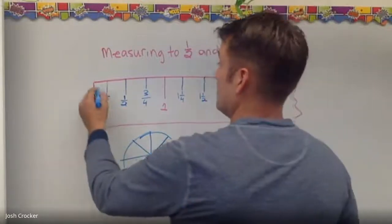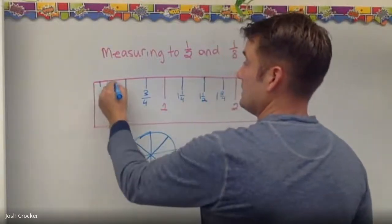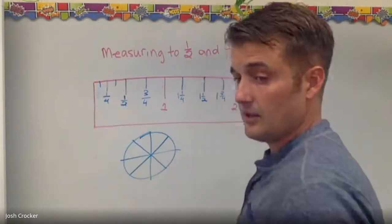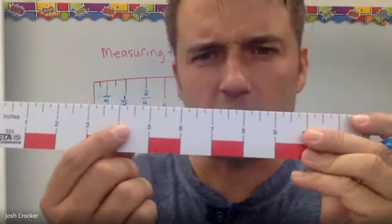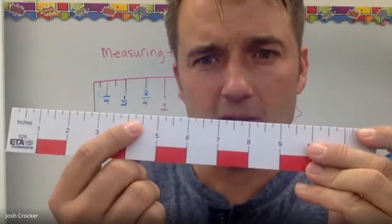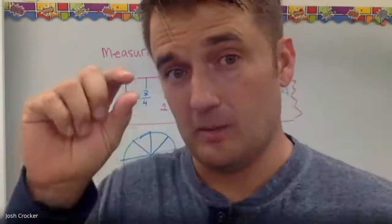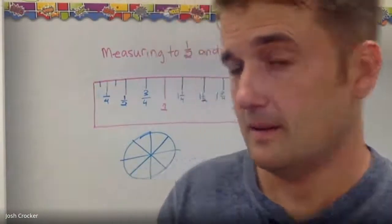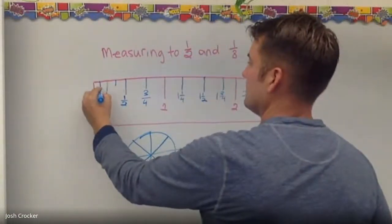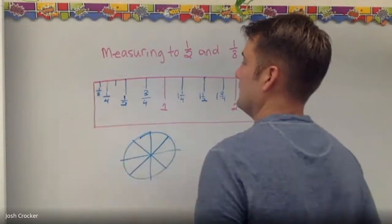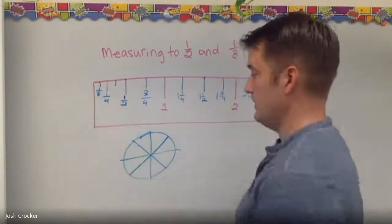Okay, so as you get into smaller and smaller pieces on a ruler, the lines get shorter and shorter. See how it's like whole inches, half, quarter—eighth would be even smaller, right? So this is the one eighth line. One fourth. So one eighth.